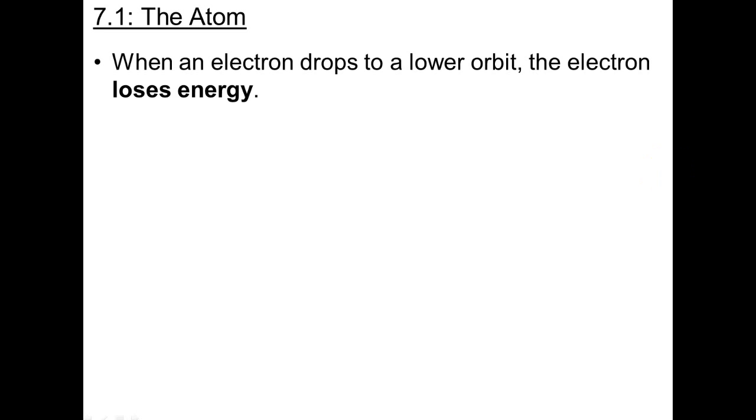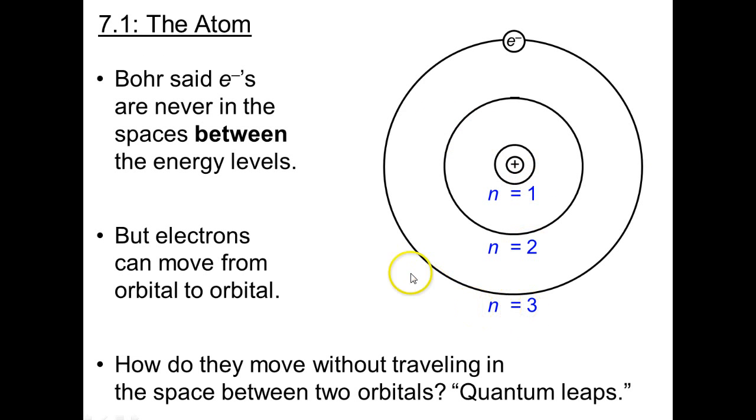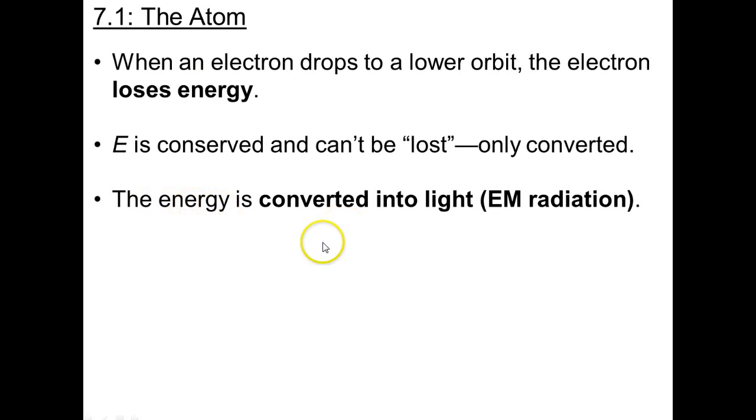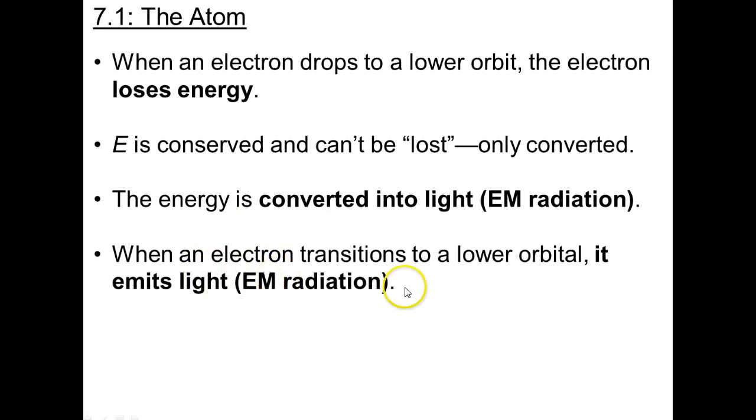Now, we know then that if an electron is to drop to a lower orbit, a lower orbital, then by definition, the electron is losing energy. Because this is the higher energy, the next n equals 2 is a lower energy, and n equals 1 is where the electron has the lowest energy. So if it drops to a lower orbit, it loses energy. But energy is conserved. It can't just be lost. It can only be converted between forms. So where does the energy go? What is it converted to? Well, as we know now, the energy is converted into light. When an electron transitions to a lower orbital, the electron emits electromagnetic radiation. It sends off light. And this has to do with why things like fire produce light.